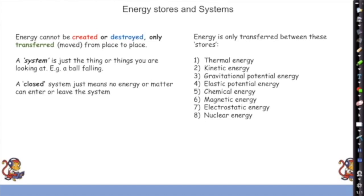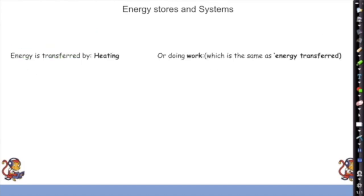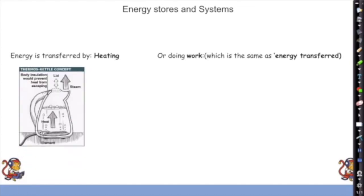Energy can be transferred by heating or by doing work — work done and energy transferred mean the same thing. For example, a kettle transfers energy: electrical energy arrives in the wire, transfers into heat energy in the filament, and that heat energy goes into the water. The number of joules of electrical energy is transferred into the water, with a little wasted as sound.